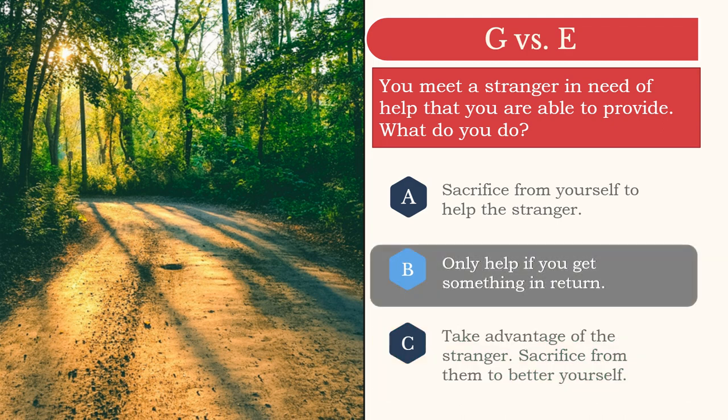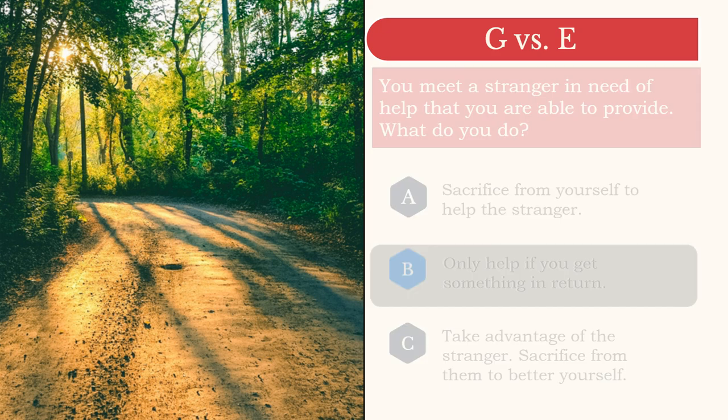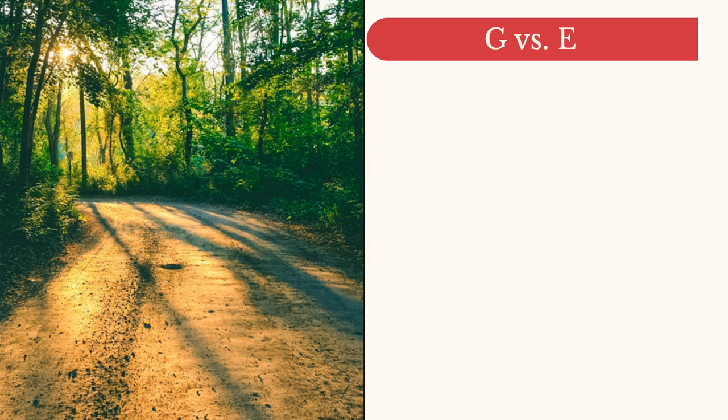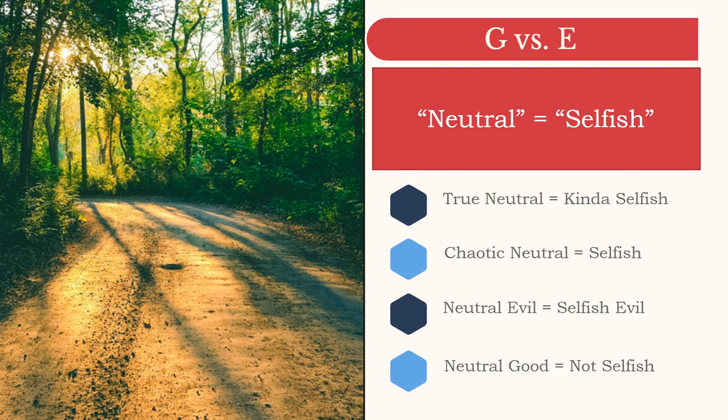And if you chose B, then you could be in that gray neutral zone of the spectrum. When it comes to good versus evil, selfish actions often fall within the neutral alignments. In fact, with two exceptions, whenever you see the word neutral, you should probably be thinking selfish. And a lack of any real commitment to good or evil could also constitute a neutral alignment.